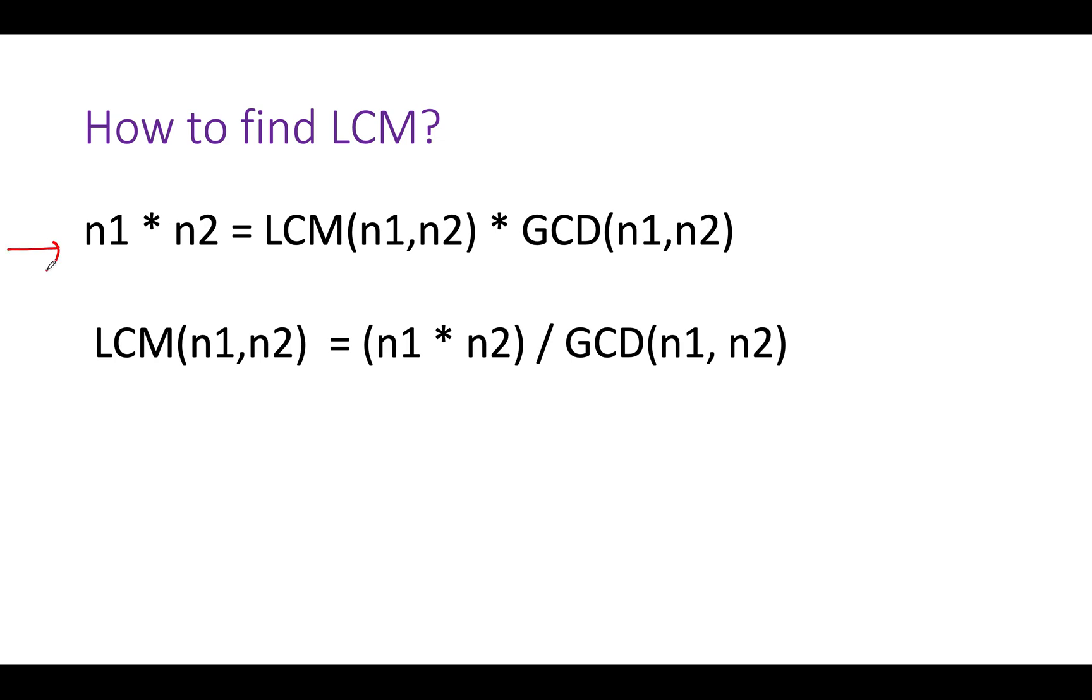How do we identify LCM? There is a unique property that n1 into n2 equals LCM of n1 into GCD of n1 and n2. If we can identify the GCD of two elements, we can easily identify the LCM. The formula becomes LCM of n1 and n2 equals n1 times n2 divided by GCD of n1 and n2.